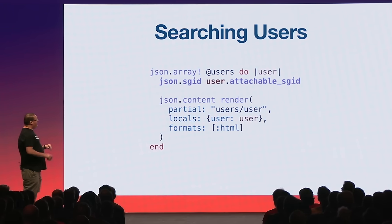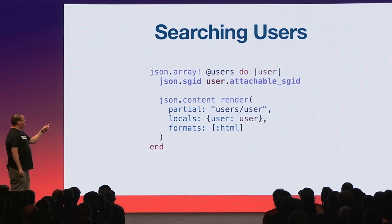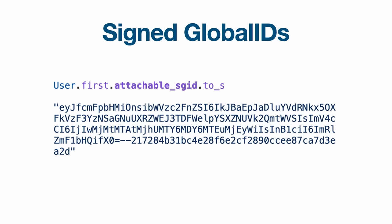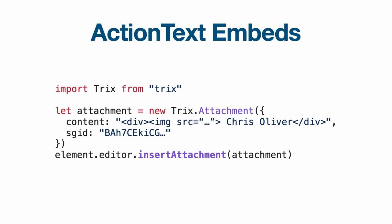The way this works is when you start typing and have an autocomplete, it asks the server for JSON. The two things you need to send back are an attachable SGID (signed global ID) and some HTML content for the preview of what you want to embed. An attachable signed global ID is a token with double hyphens — the left side is base64 encoded data and the right side is the signature. This is what gets embedded in the editor. On the client side, you take the JSON, insert the content and SGID from the server, and insert that as an attachment into the Trix editor, which is the front end for Action Text.